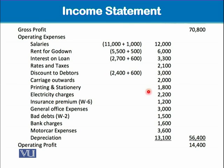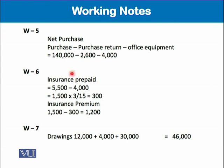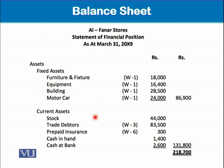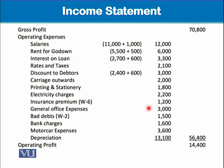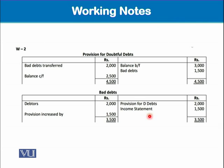Carriage outward, printing and stationery, and electricity are operating expenses. For insurance premium, there is an adjustment: 5,500 total, with 4,000 relating to drawings which is extracted and placed elsewhere. The remaining 1,500 is for 15 months, so 300 is prepaid insurance, leaving 1,200 as the insurance expense. General office expenses are 3,000 taken straight from the trial balance. For bad debts, 1,500 results from an increase in the provision for doubtful debts debited to bad debts.